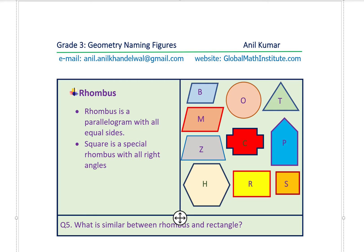A rhombus is a parallelogram — a four-sided figure with two pairs of parallel sides — but with all equal sides. Looking at figure 'B,' all sides are equal, shown by two tick marks, and the opposite sides are parallel, shown by arrows. So figure B represents the rhombus.